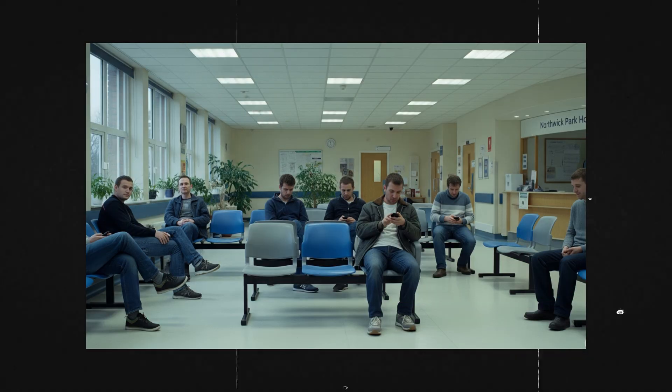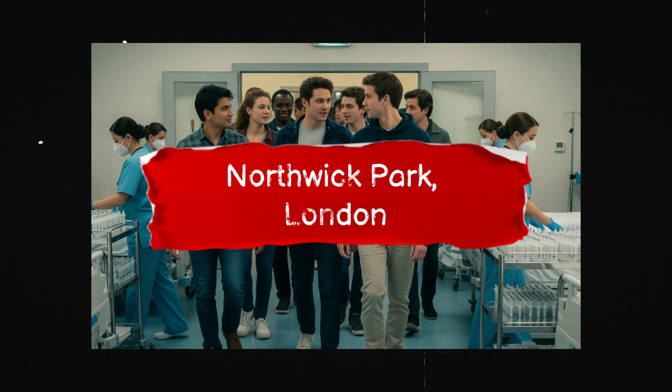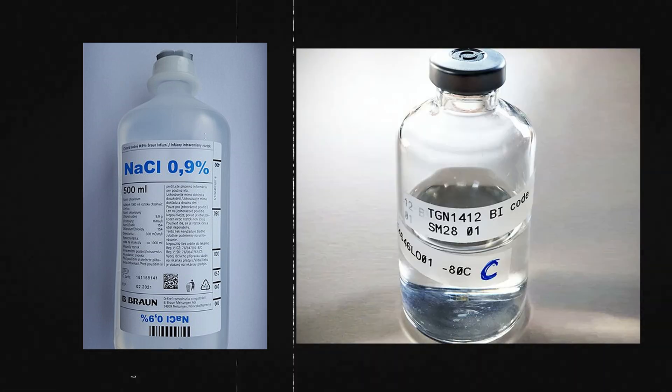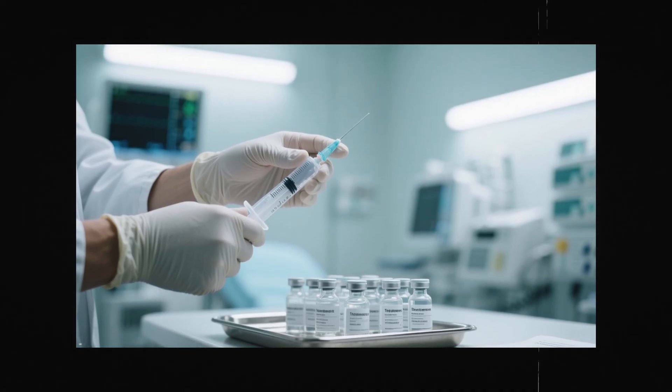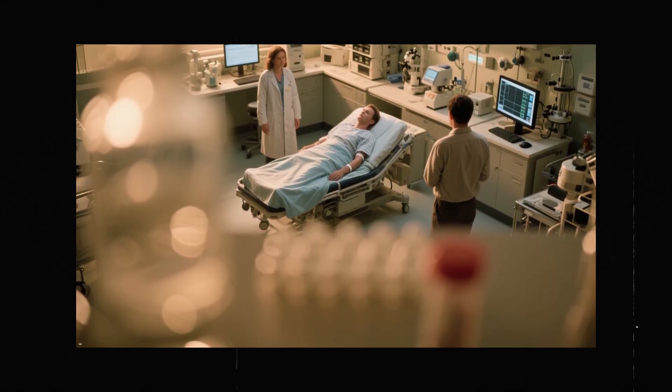In March 2006, eight men aged 19 to 34 arrived at Northwick Park. Two would receive a placebo, harmless saline, and six would get TGN-1412 at what seemed like a tiny dose, hundreds of times lower than what had been safe in animals. The injections began in the morning, given one by one, about 10 minutes apart. Everything seemed like a standard Phase 1 trial.